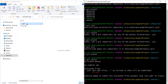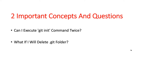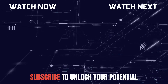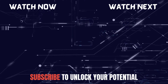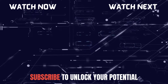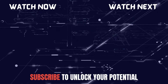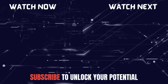So we discussed these two questions. First, we can execute git init as many times as we want — it is not going to affect anything. Second, deleting the .git folder will damage all your tracking history for the project, so be very careful when dealing with the .git folder. I hope you understood these two questions and the concept behind them. If you liked the video, please subscribe to the channel and share it with your friends.